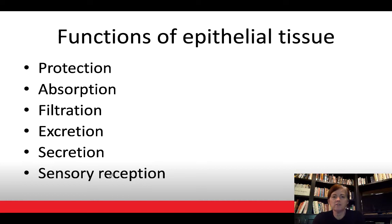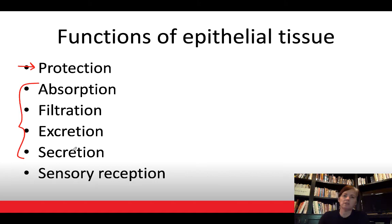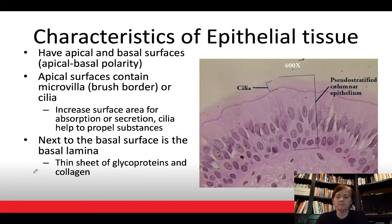Some functions of epithelial tissue include protection — think about the skin. We also have absorption and secretion: we're able to absorb substances across epithelial tissue and also secrete substances we don't want to keep. Sensory receptors are also part of epithelial tissue. Epithelial tissue is arranged so that it has an apical surface and a basal surface, showing polarity — meaning there are structural differences between the two.